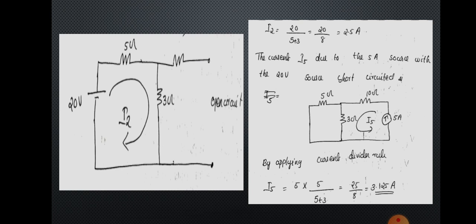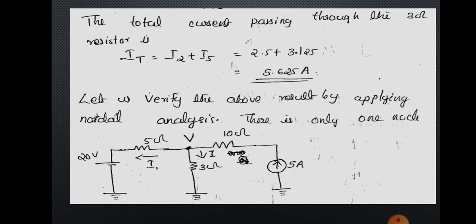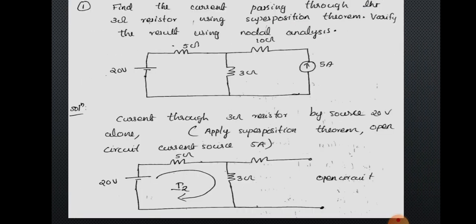The current of 3.125 ampere flows from upper side to lower side through the 3 ohm. You now have the values of current through 3 ohm by the effect of the 20 volt battery and the 5 ampere source. By superposition theorem, the net current is the sum: i_total = i2 + i5 = 2.5 + 3.125 = 5.625 ampere. That is the current through the 3 ohm resistance by the superposition principle.